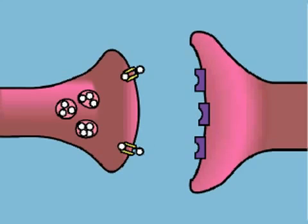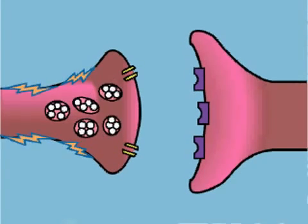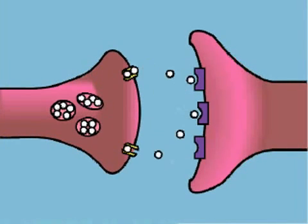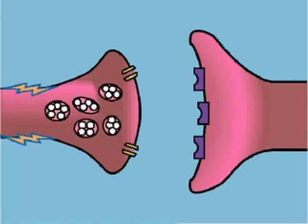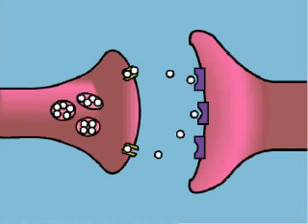The neurotransmitter that is taken back up into the presynaptic neuron is then repackaged into vesicles that can be released the next time an action potential reaches the axon terminal. The entire process repeats each time an action potential reaches the axon terminal of the presynaptic neuron.